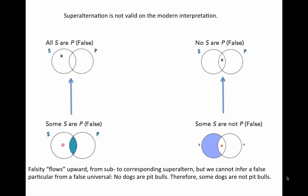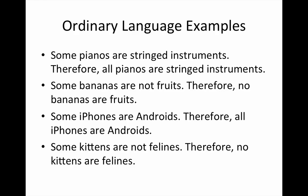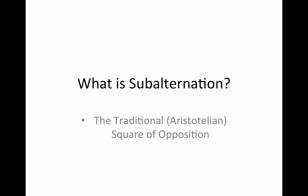Let's look at some ordinary language examples before we finish. Read through these and think about how you can diagram each relation to see how a false particular yields a false corresponding universal. I hope this tutorial on sub- and superalternation helps you better understand what it means to move around the square of opposition — making inferences from a universal to its corresponding particular, and from a particular to its corresponding universal.